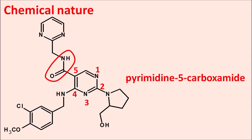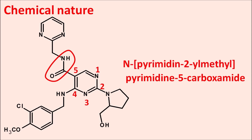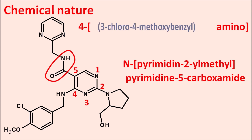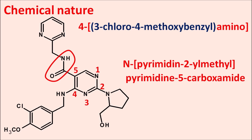We can write this as pyrimidine-5-carboxamide. On the nitrogen of the amide, another chain is present containing a pyrimidine ring system, written as N-pyrimidin-2-yl-methyl. Simply, avanafil is a pyrimidine-5-carboxamide derivative having another pyrimidine ring attached to the methyl group on the nitrogen. At the fourth position, we can observe an amino group — written as 4-amino — and this amine group is further attached to a benzyl ring with side chains, which is 3-chloro-4-methoxybenzyl.